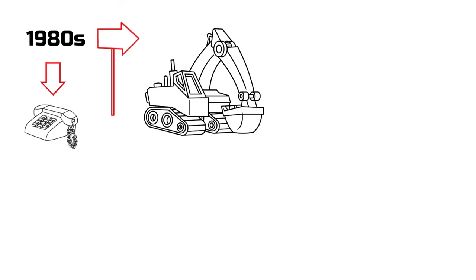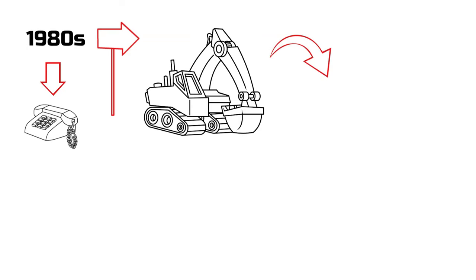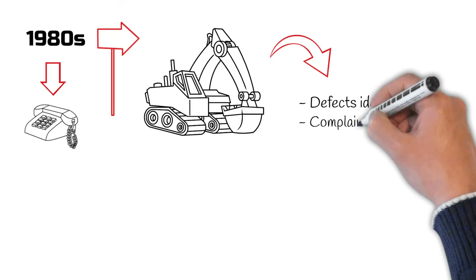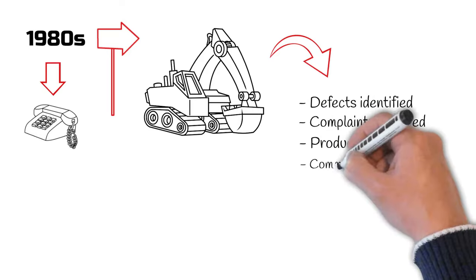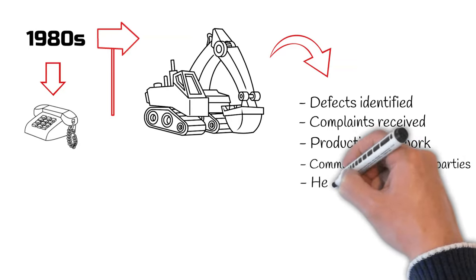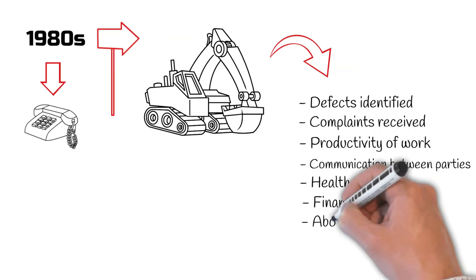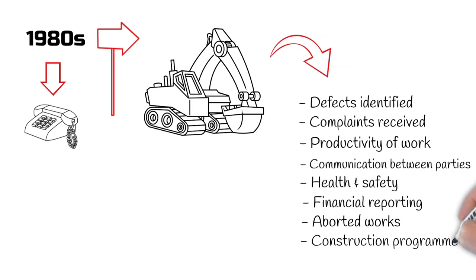Within construction contracts, you'll often find SLAs which measure a contractor or subcontractor against certain metrics. These may include defects identified, complaints received, productivity of work, communication between parties, health and safety, financial reporting, aborted works, and construction program, to name a few.